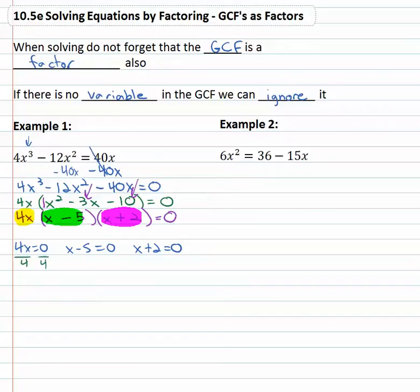First one we solve by dividing by four, x equals zero. Second one we solve by adding five, x equals five. And last one we solve by subtracting two, x equals negative two.